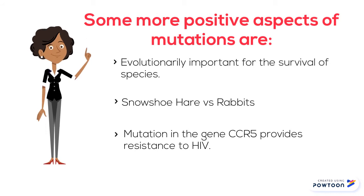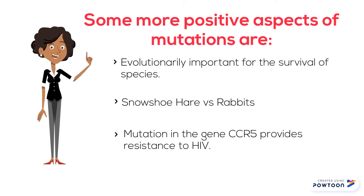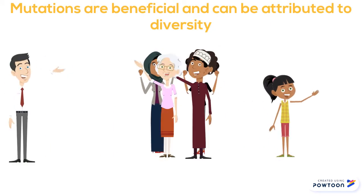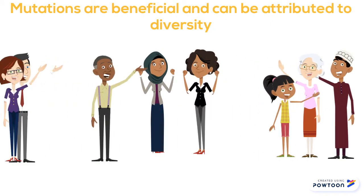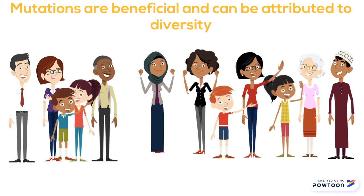Development of mutations evolutionarily has been important to the survival of many species. For example, unlike rabbits, the snowshoe hare was able to develop longer hind legs to be able to flee from its predators. In humans, or some humans, the mutation in the gene CCR5 provides resistance to HIV and subsequent development of AIDS. Mutations can be attributed to much of the diversity we see in our world today.